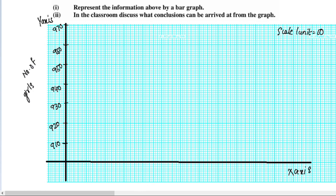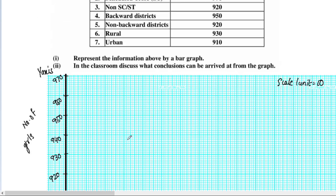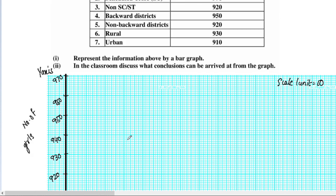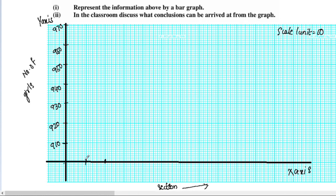On the X-axis, we will mark the different sections of society. The first section is Scheduled Caste with a value of 940. I will select 940 on the scale and draw the bar for Scheduled Caste at 940.